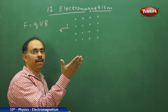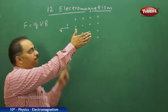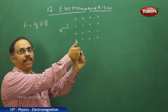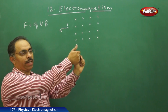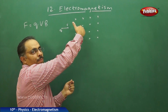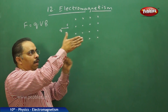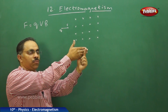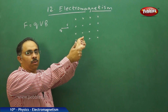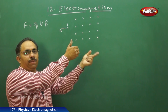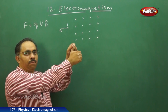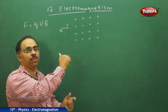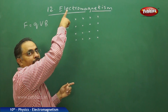We place our right hand in the direction of the velocity of the charged particles, then curl our fingers in the direction of the magnetic field — which is going into the board. Pointing the right-hand fingers in the direction of velocity and curling those fingers into the board, the thumb stretches in the upward direction. This thumb indicates the direction of the force, meaning the force is in the vertically upward direction.